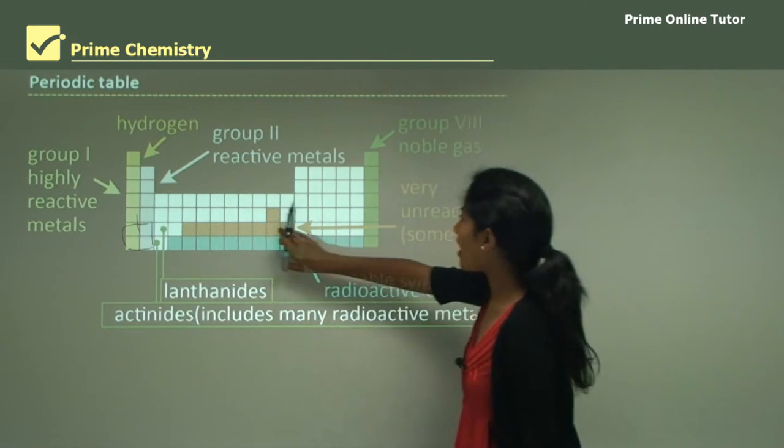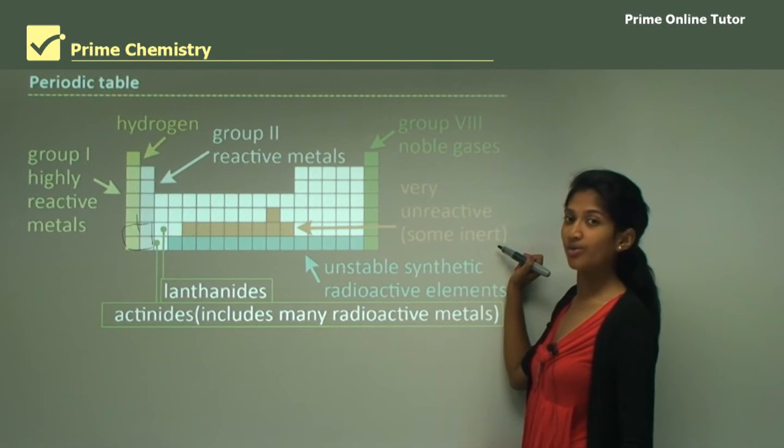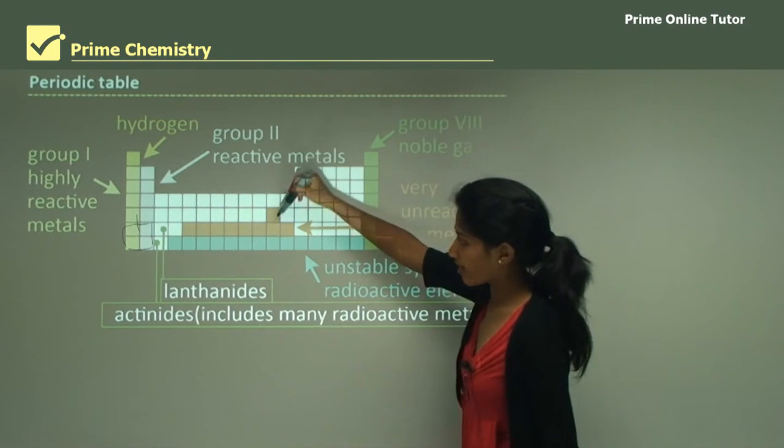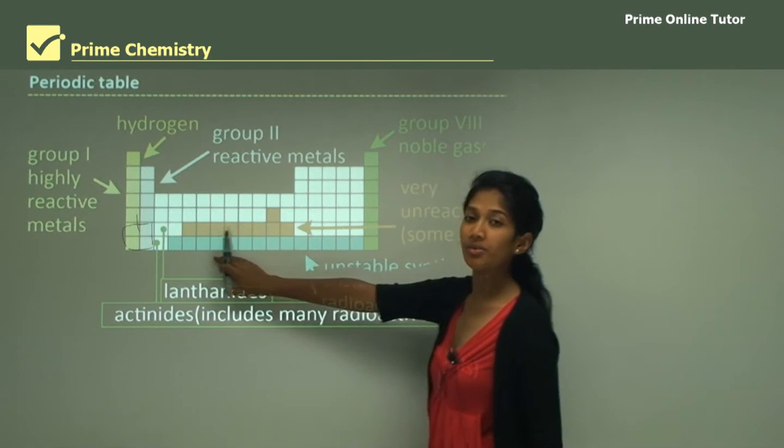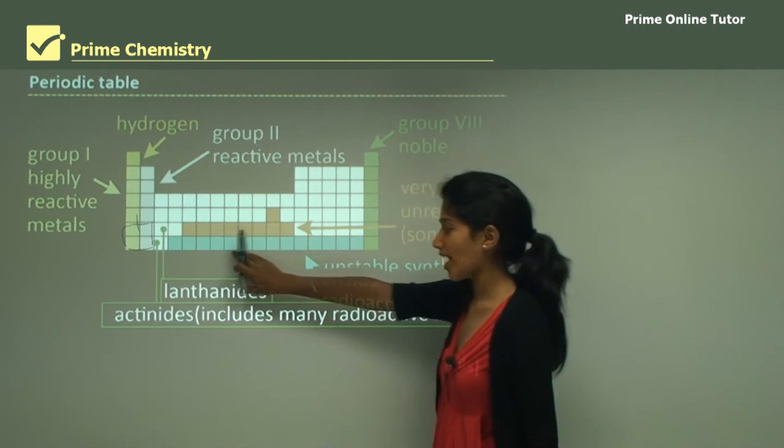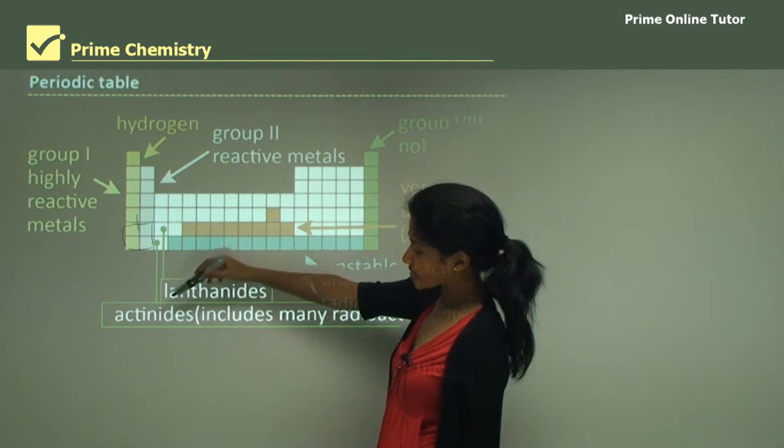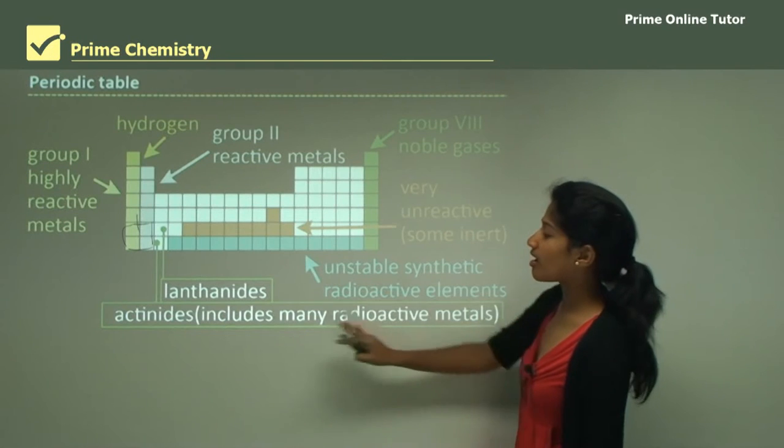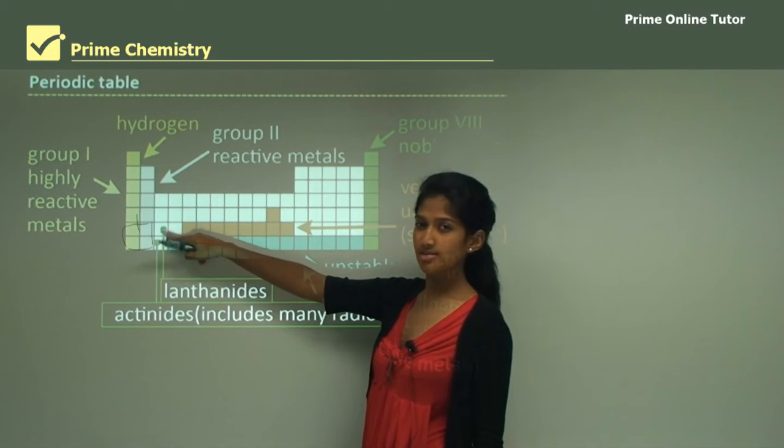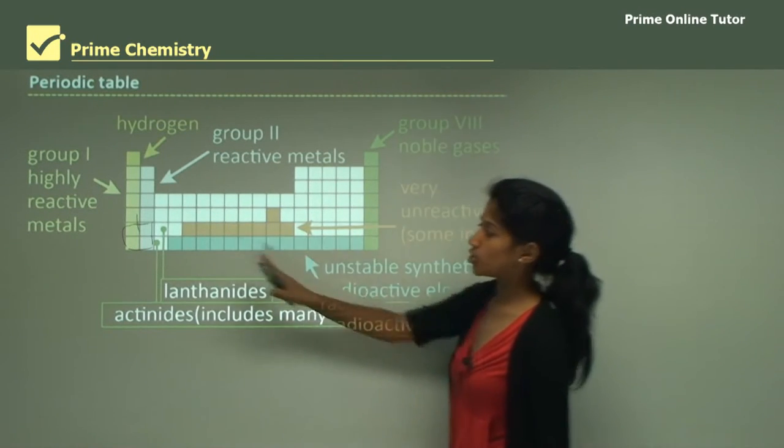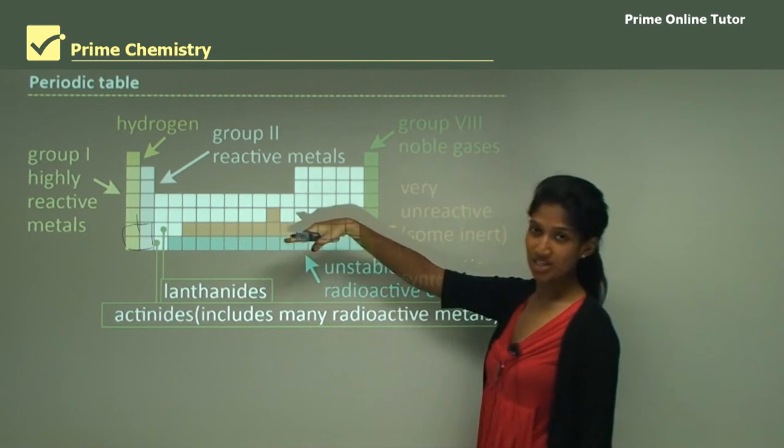Here you would find the very unreactive metals and some of them are inert, especially gold and silver. The unstable synthetic radioactive elements are around the bottom of the table. Here you would find your lanthanides and also your actinides. These include many radioactive metals. You should know your group 1, your group 2 elements, your noble gases and also your inert metals.